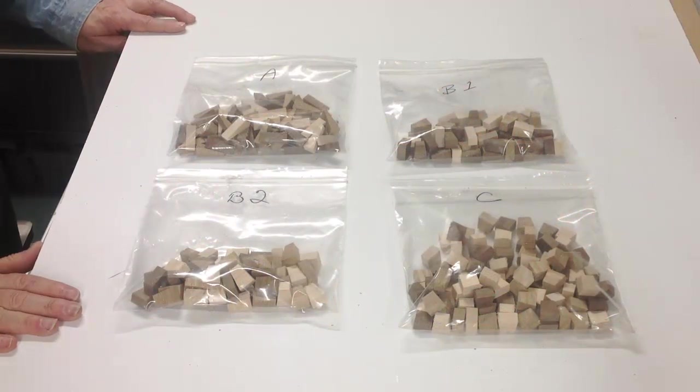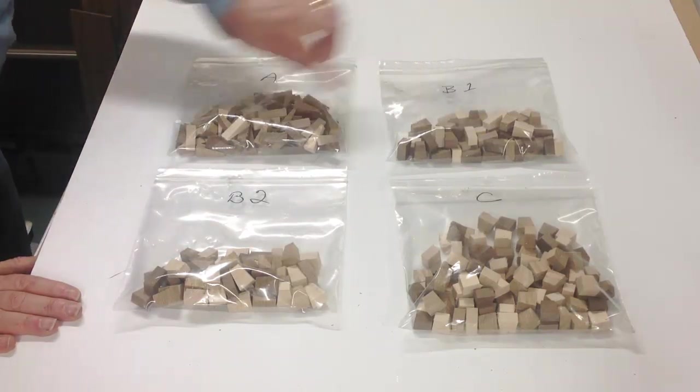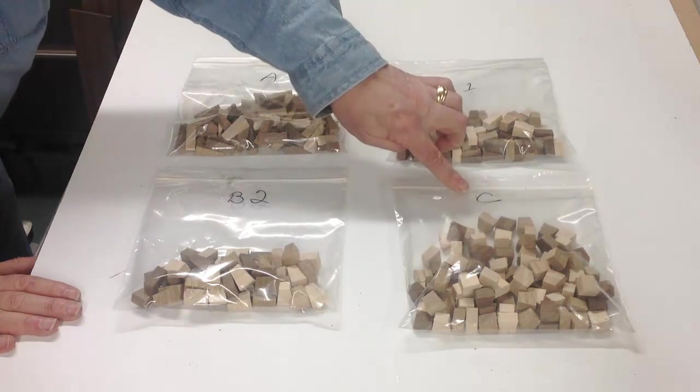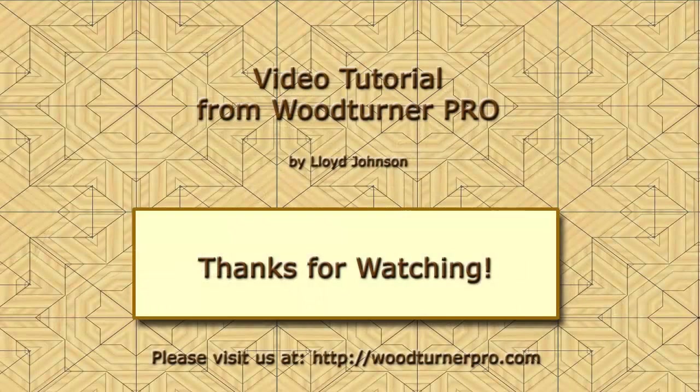So here are all the segments that are going to make the ten rings in our tornado globe. We've got the A's. There's going to be two rings of A's, two rings of B1, two rings of B2, and four rings of C. So as you can see, it doesn't take that long to cut the segments for a vessel like this. So in the next video, we're going to do the exact same thing, but we're going to use this table saw instead. So thanks for watching.